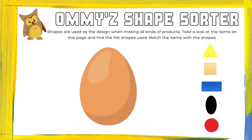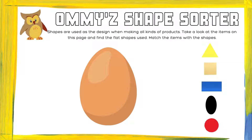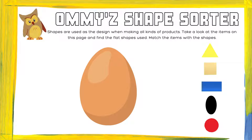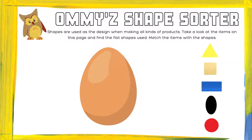Let's start here. This is an egg. What is this egg shaped most like? Is it the triangle, the square, the rectangle, the oval, or the circle? Great job, friends — it's the oval.